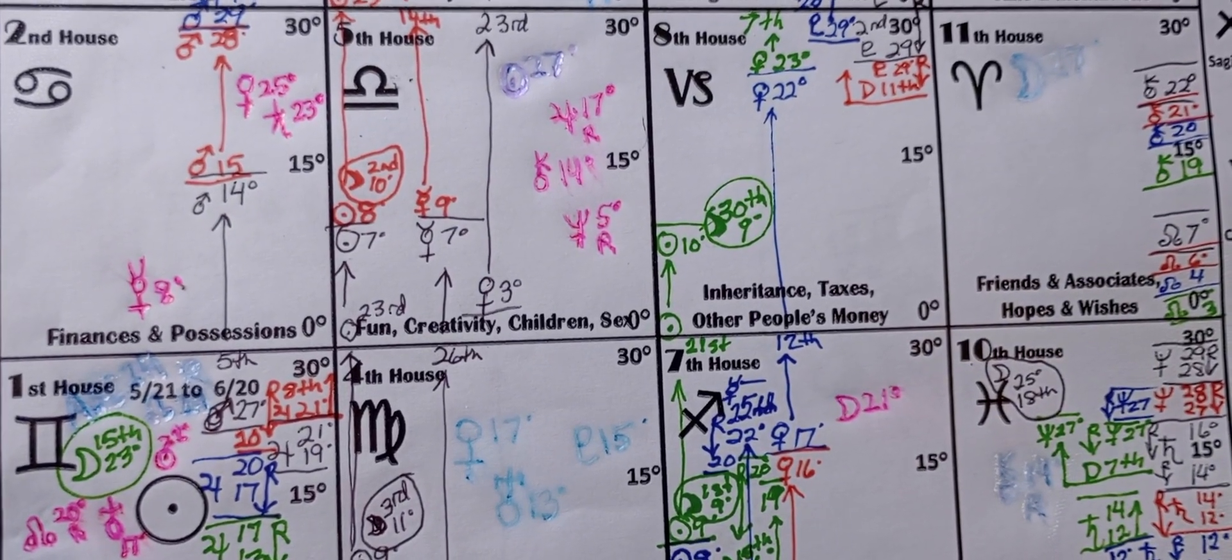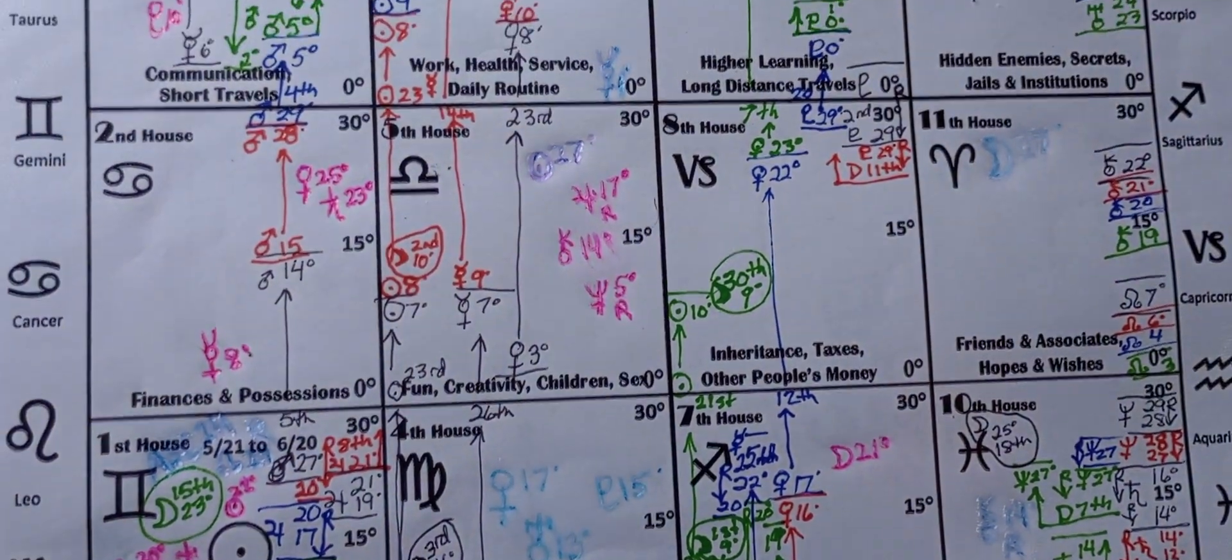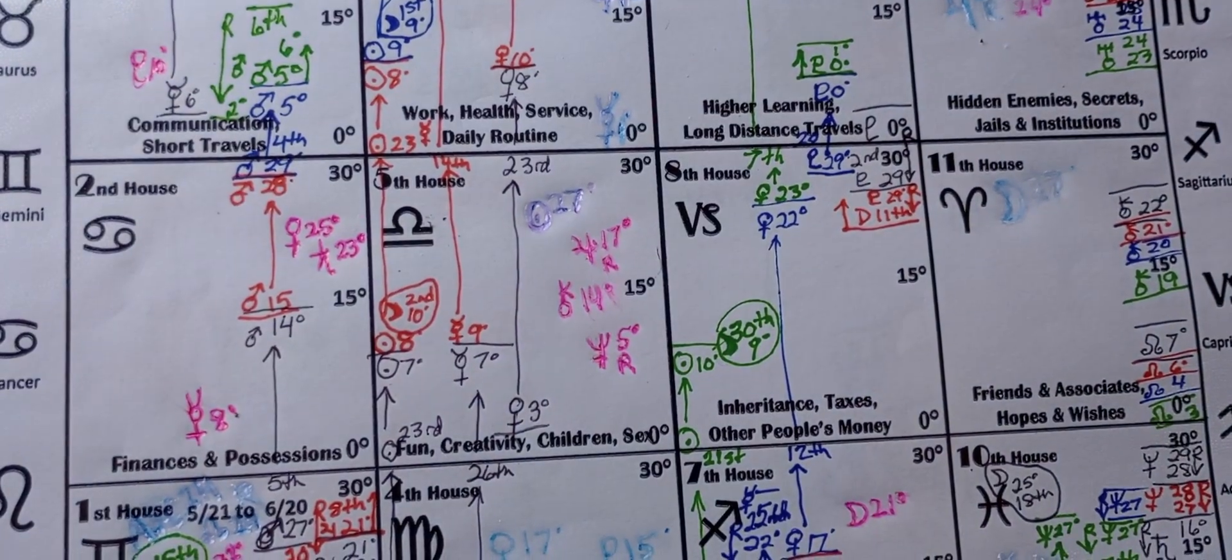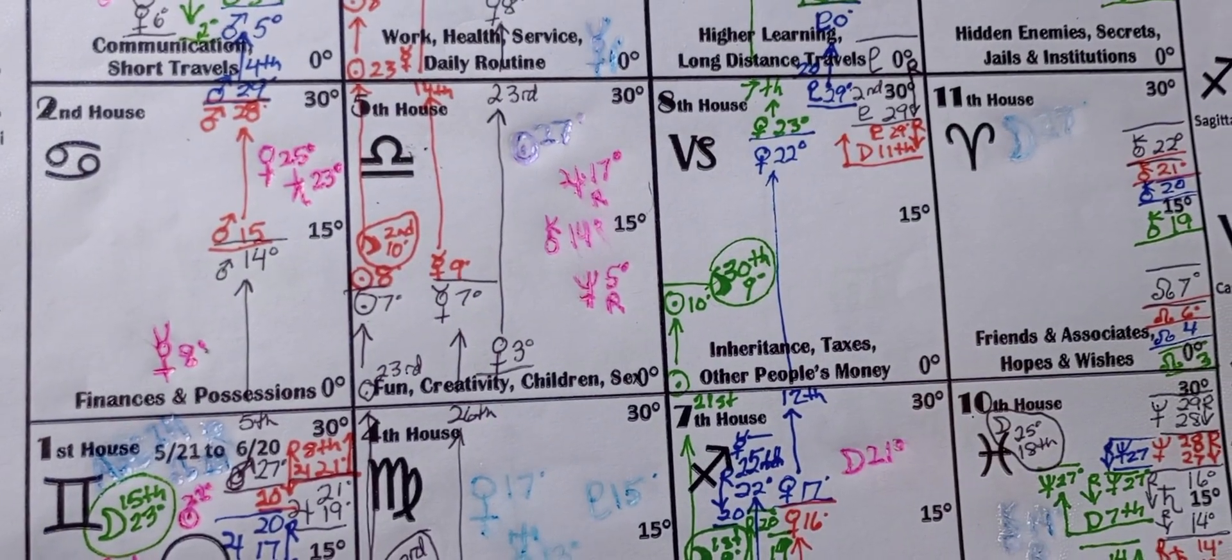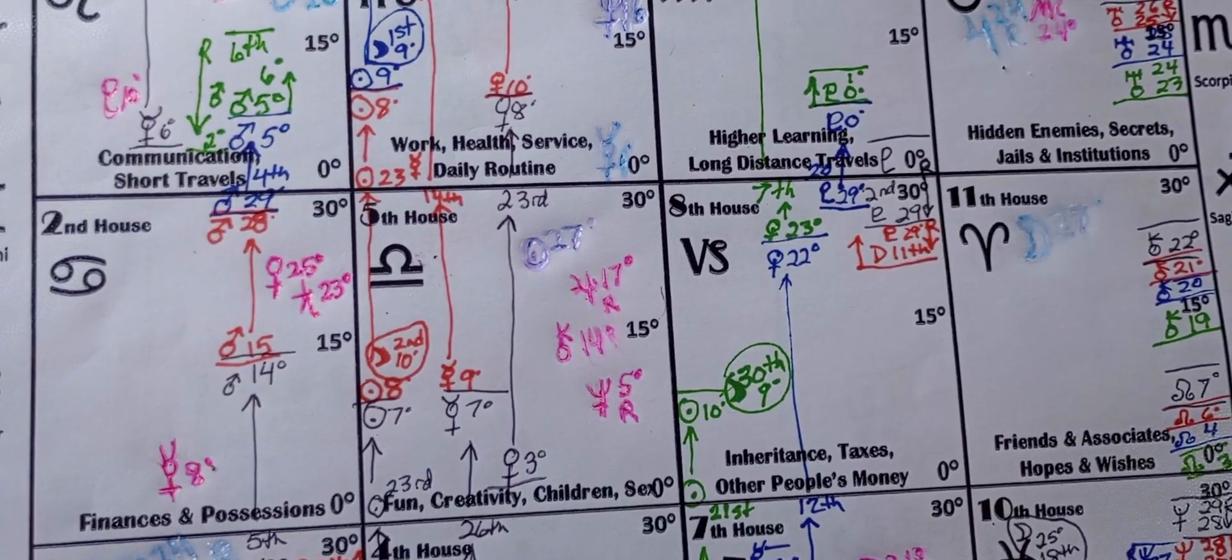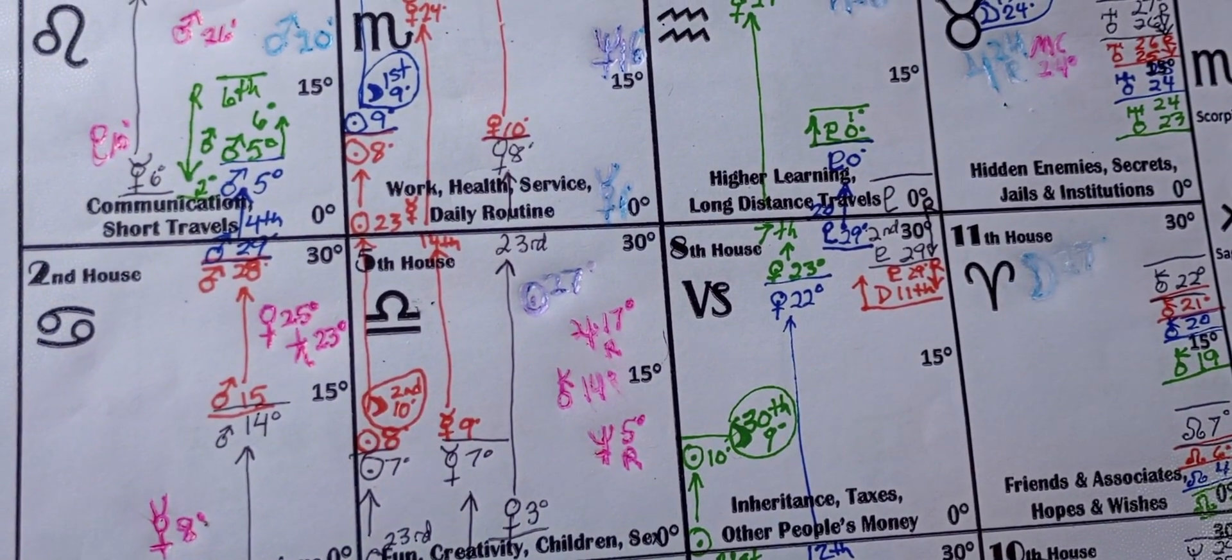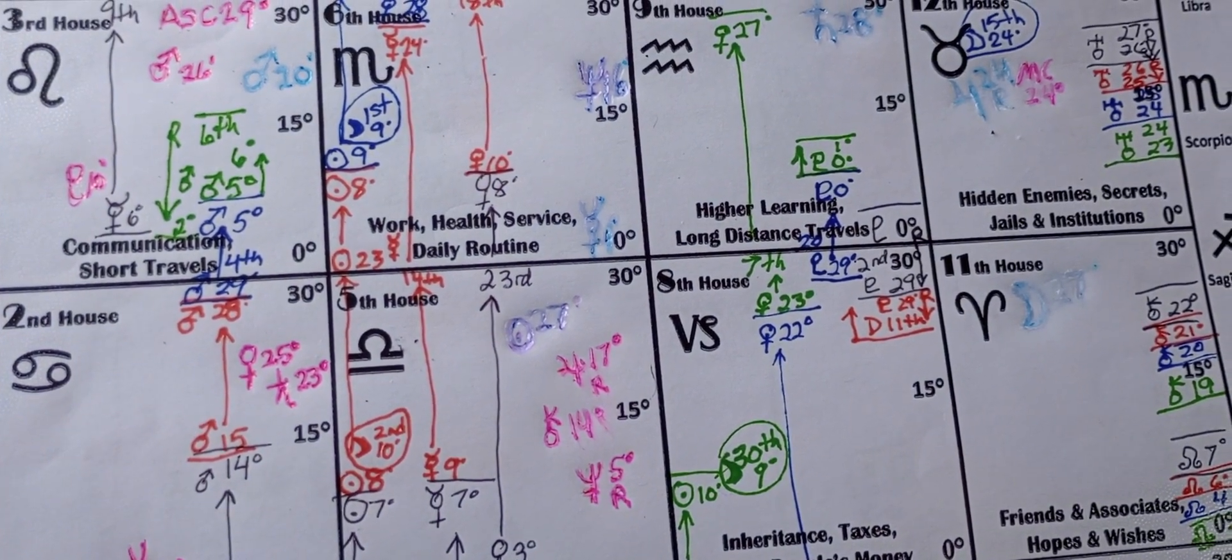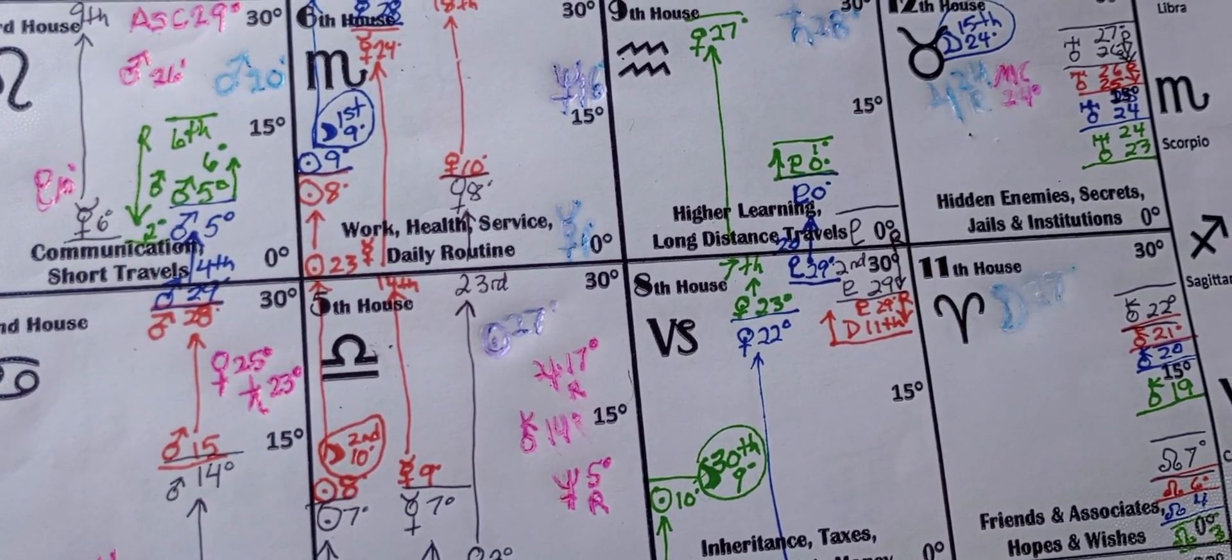So I really should do a whole video just on Trump's chart, because as you can see where the pink falls, there's one thing I can tell you about the Donald. Donald, he is as he presents himself.